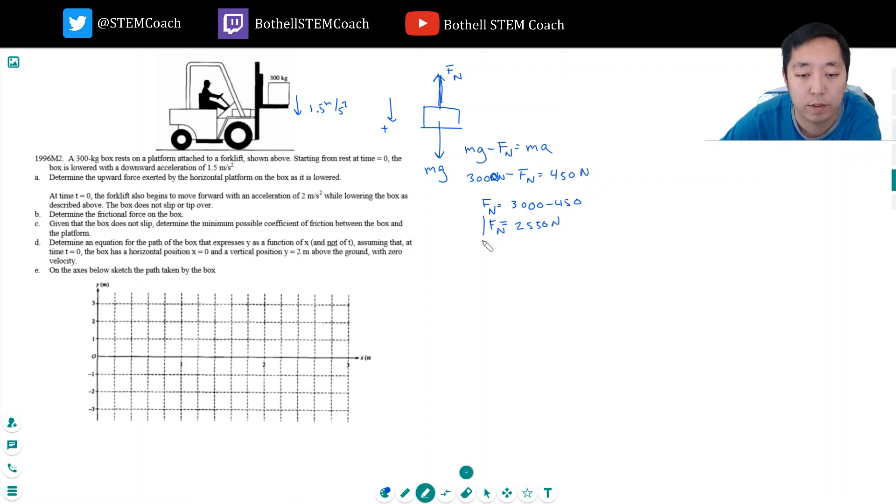So the normal force here is equal to 3000 minus 450, and that's equal to 2550 newtons. That's the force that the platform is going to put out. It doesn't need to support the entire weight because we're kind of letting it fall a little bit. That's why the platform doesn't have to exert the full 3000 newtons.